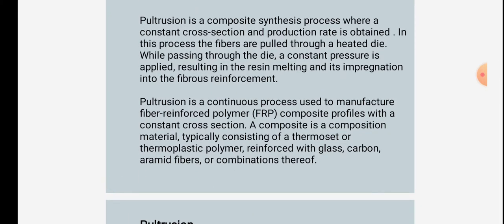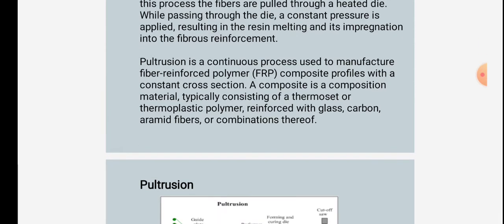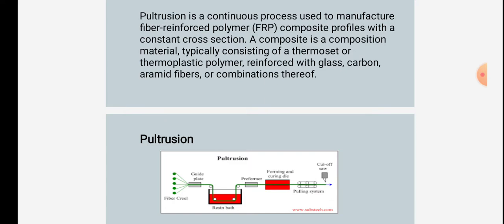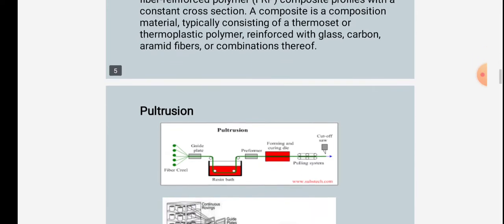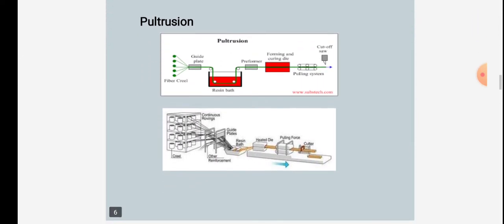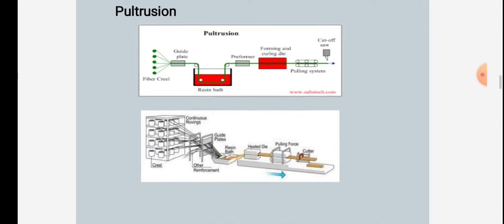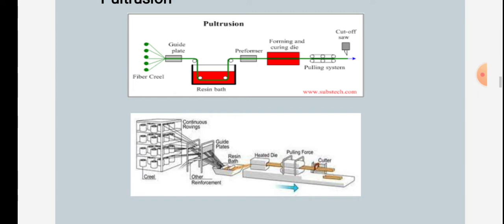Pultrusion is a continuous process used to manufacture fiber reinforced polymer composite profiles with a constant cross section. A composite is a material typically consisting of a thermoset or thermoplastic polymer reinforced with glass, carbon, or aramid fibers, or combinations thereof.